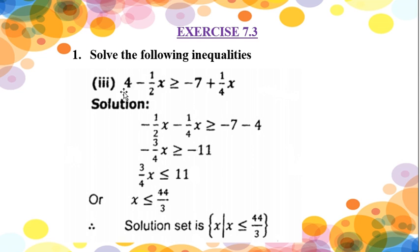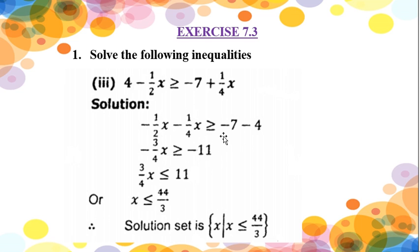This 4 is adding on the right side; when moved to the other side it will be subtracted. We take the LCM of 2 and 4, which equals 4. Since my 2 is not equal to 4, to make it 4 I multiply the numerator and denominator by 2. So: 2/4 minus 1/4 — after taking the LCM, -2 and -1 become -3/4 — times x, is greater than or equal to -11, because -7 and -4 are both negative so they are added.